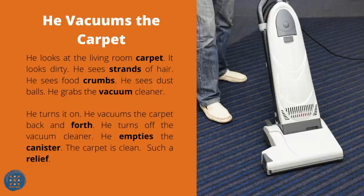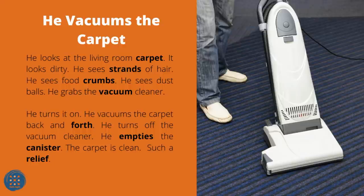He Vacuums the Carpet. He looks at the living room carpet — it looks dirty. He sees strands of hair, food crumbs, and dust balls. He grabs the vacuum cleaner and turns it on. He vacuums the carpet back and forth. He turns off the vacuum cleaner and empties the canister. The carpet is clean. Such a relief.